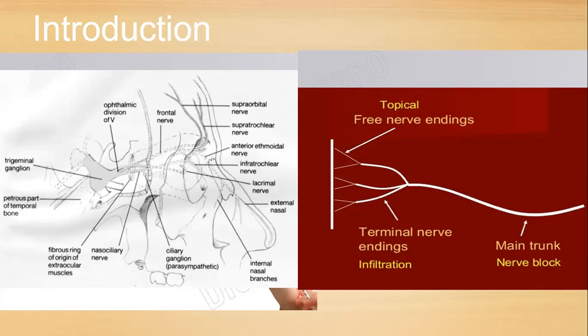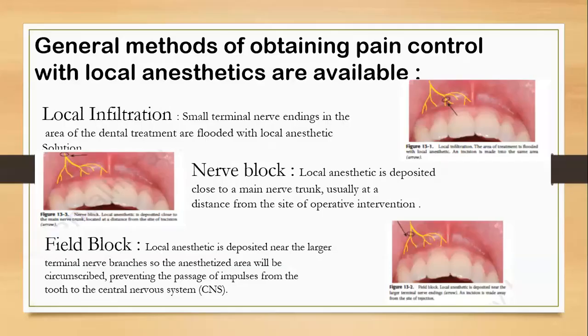In the black and white diagram, you can see the division of the trigeminal nerve and especially the maxillary nerve emerging from the trigeminal ganglion. We can see the ophthalmic division dividing into the frontal nerve, the supraorbital, and supratrochlear. Then we have the maxillary nerve and its branches. I will not deal with the anatomy in detail because you have learned it previously.